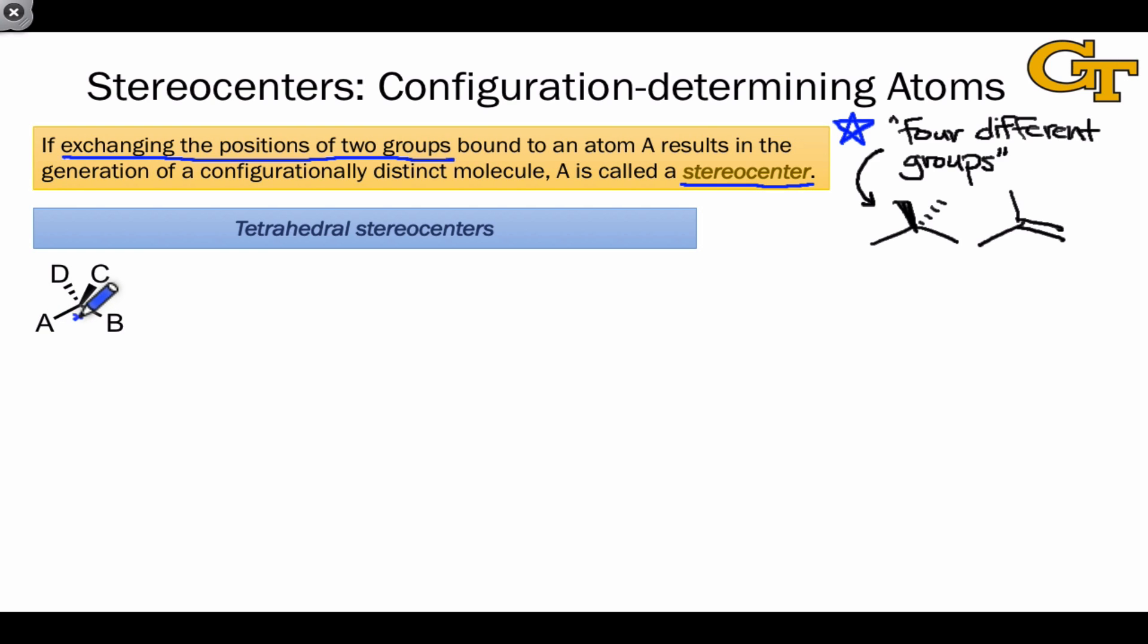Notice that if we exchange the positions of B and A bound to this central carbon, we end up with the mirror image of the original, and this is non-identical to the original molecule. The two are enantiomers. Because these are stereoisomers, the starred carbon is a stereocenter.